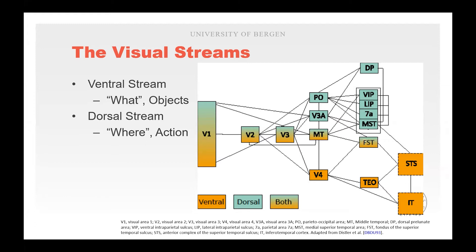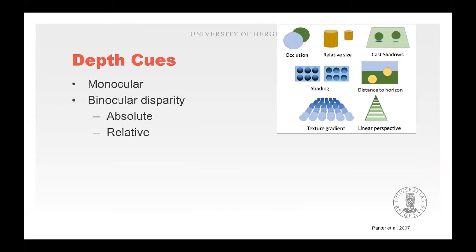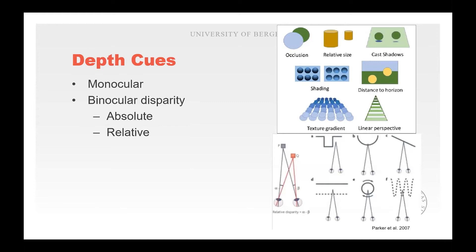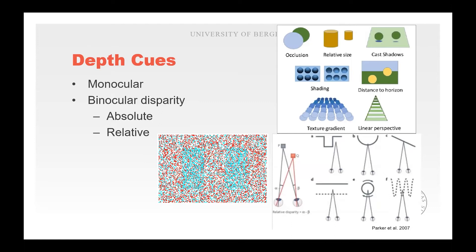Both visual streams include information from monocular and binocular depth cues. The monocular depth cues include occlusion, shading, texture, and linear perspective — these can be seen with just one eye. The binocular cues utilize information from both eyes to triangulate depth positions of objects; this is a more accurate but also more costly process. A paradigm often used to investigate differences between monocular and binocular cues is random dot stereograms. If we were wearing 3D glasses now, we could see two blue squares popping out of the screen, but since we're not, we can't.